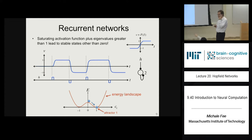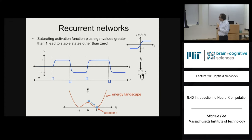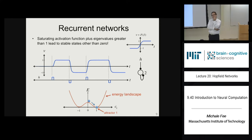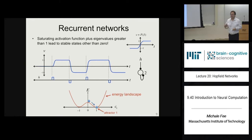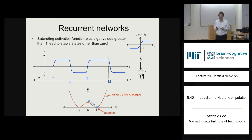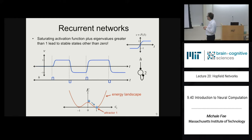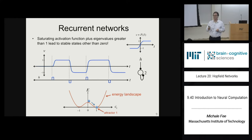A student asks about the stable fixed points. The stable fixed point is a state where slight perturbations cause the system to return to that point. The unstable fixed point at 0 is where a small nudge causes the state to run away. The energy landscape shape will be defined more formally later. This analysis was all for the case of one neuron — now let's extend it to multiple neurons.